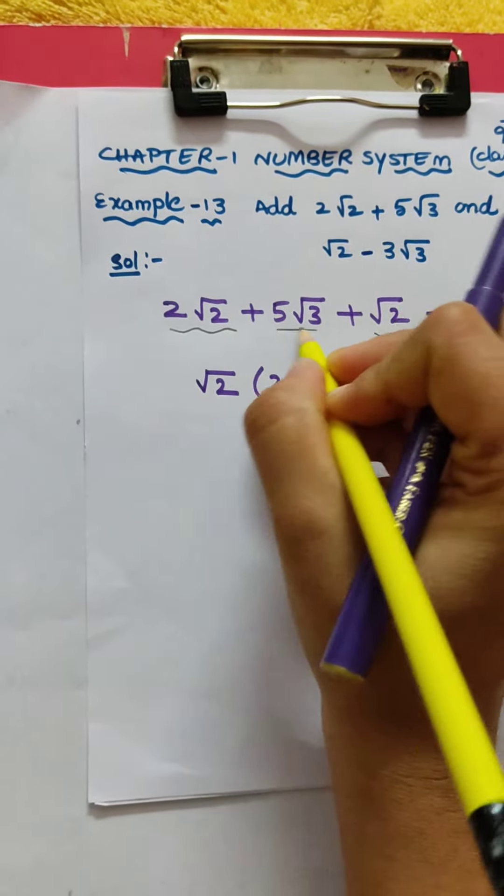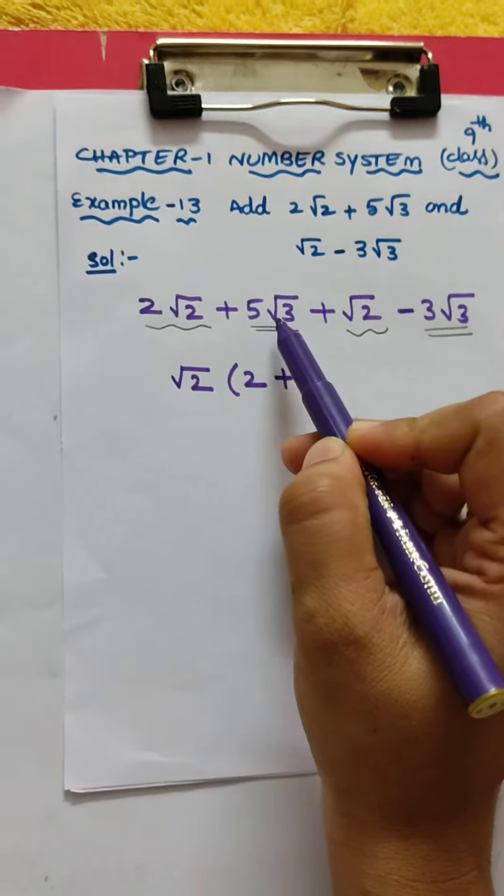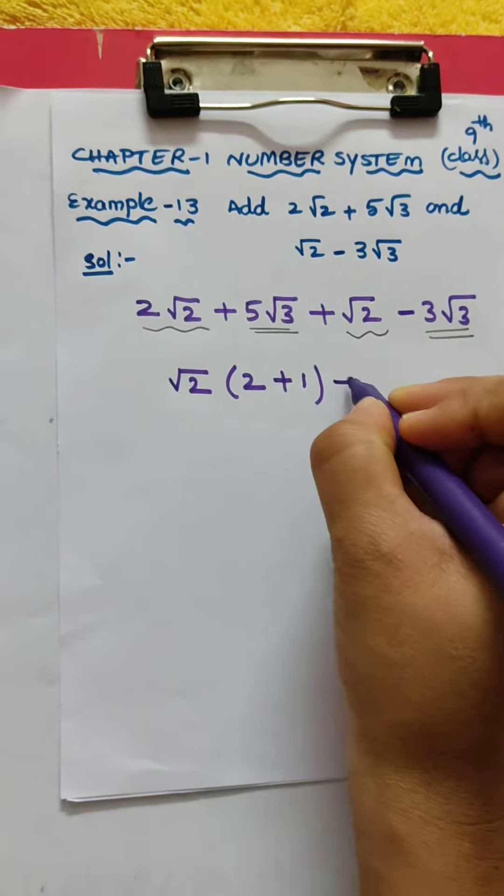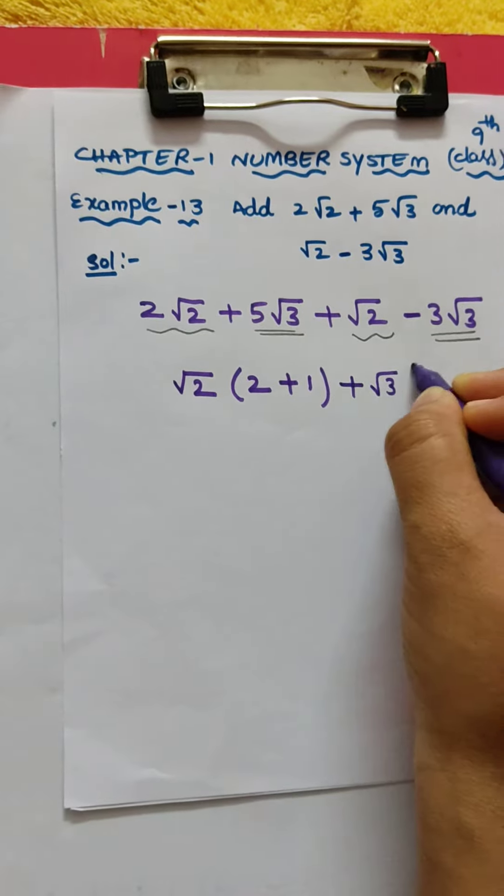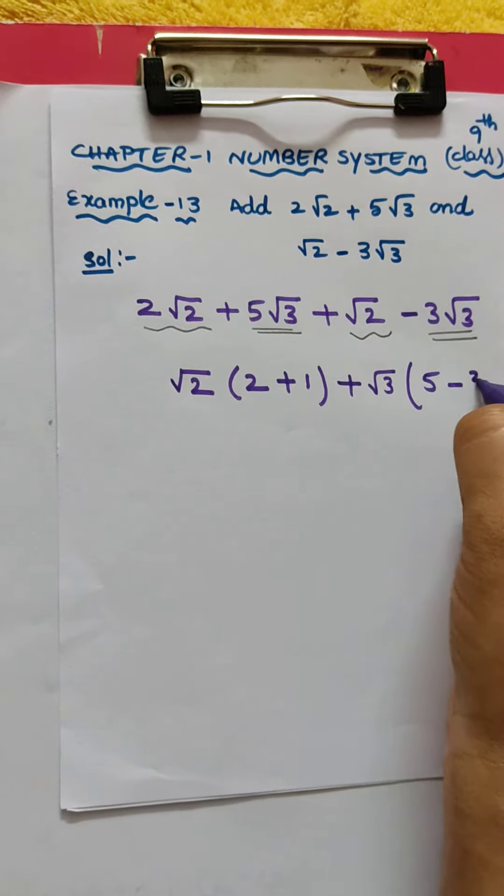Next, in these two, which is common? √3. Plus, I am taking √3 means 5 is the remaining part. Minus √3 common means what is left out? 3.